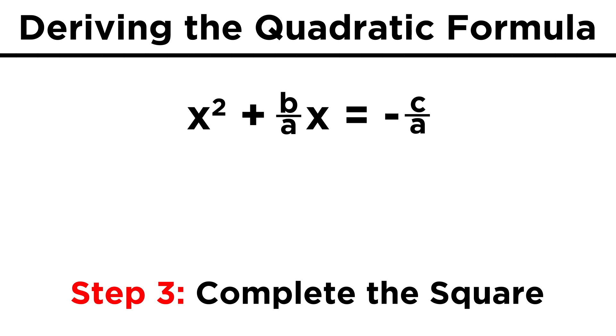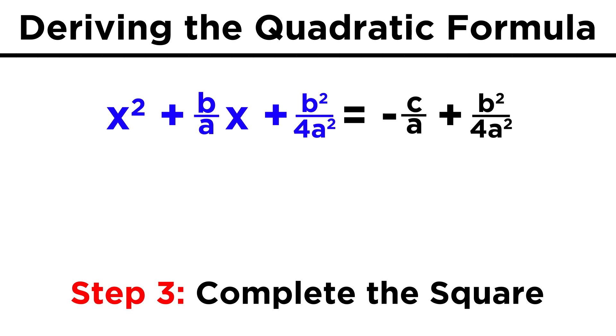Then as usual, we bring the last term to the other side of the equation. Now remember that in order to complete the square, we take this term, cut it in half, and then square it. It may seem trickier with variables instead of numbers, but it's really the same thing, so we get b over two a, since dividing by two just puts a two in the denominator, and then squaring gives us b squared over four a squared. This term will be added to both sides.